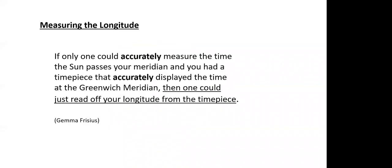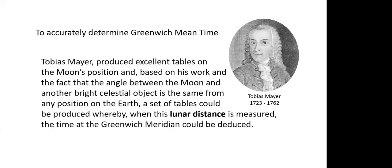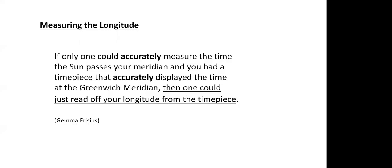Going back to Gemma Frisius's words: if only one could accurately measure the time the sun passes your meridian, and you had a timepiece that could accurately measure the time at the Greenwich meridian, then one could just read off your longitude from the timepiece. When you study this, keep in mind that it's possible to denote longitude in terms of time. In astronomy, we measure a star's east-west position — its longitude — in right ascension, which is measured in time: hours, minutes, and seconds. Similarly, on the Earth's surface you can measure longitude in hours, minutes, or seconds.